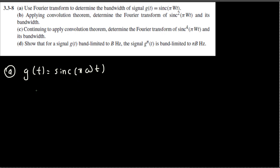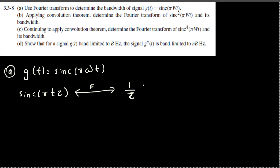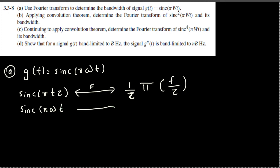There's a duality property which states that when we have sinc(φt/τ), its Fourier transform is (1/τ) × rect(f/τ). Looking at what we have here, sinc(φωt), the difference compared to the property is that τ is replaced by ω. So we replace τ with ω, giving us (1/ω) × rect(f/ω).